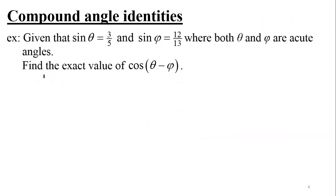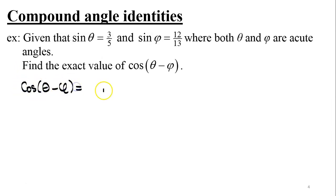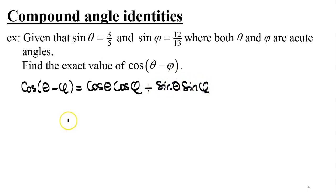In the last example, we are given sine theta equals three-fifths and sine phi equals twelve-thirteenths, where both theta and phi are acute angles, and we need to find the exact value of cosine of theta minus phi. Recognizing the form cosine a minus b, we apply the compound angle identity: cosine of theta minus phi equals cosine theta cosine phi plus sine theta sine phi. We already have the sine values but still need cosine theta and cosine phi.